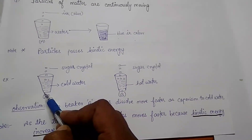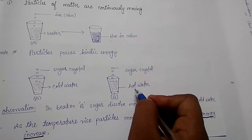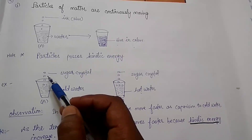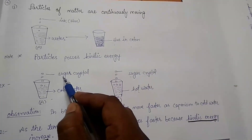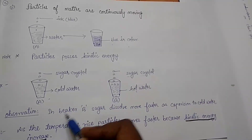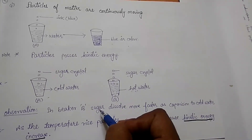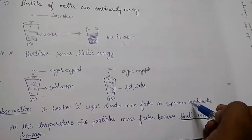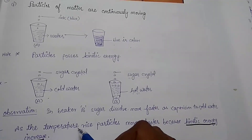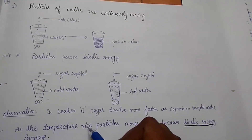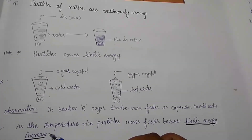Let us understand another example. Take two glasses — fill the first with cold water and the second with hot water. Now add the same amount of sugar crystals into each. We observe that in the beaker with hot water, sugar dissolves much faster compared to cold water. This is because as temperature rises, particles move faster because kinetic energy increases.